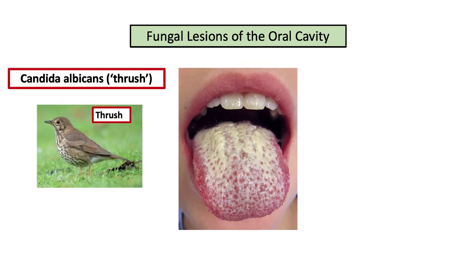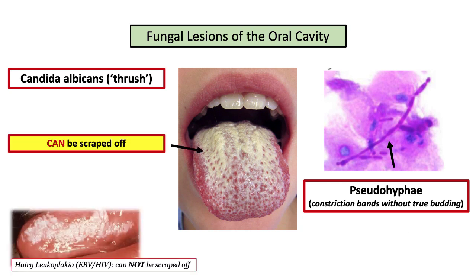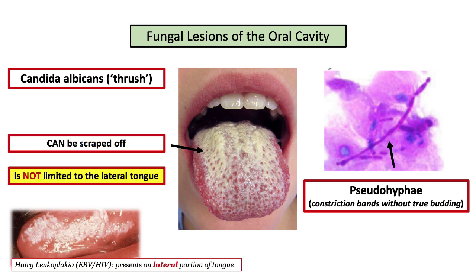Oral thrush is caused by Candida albicans. Microscopically, Candida albicans will be described by the finding of pseudohyphae. These represent constriction bands when viewed under the microscope — they are not true hyphae. And not to be confused with oral hairy leukoplakia, which cannot be scraped off, but oral thrush CAN be scraped off and it's not limited to the lateral tongue.